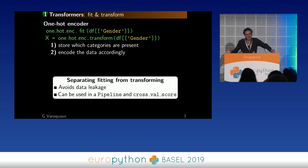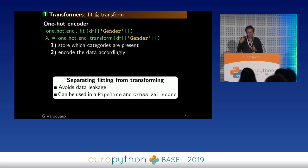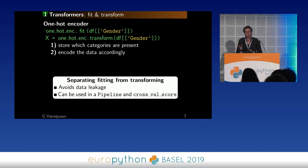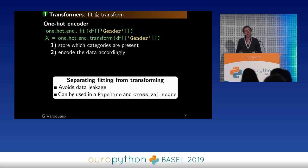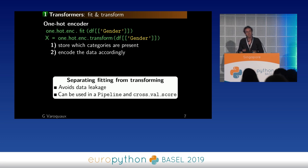In scikit-learn we like to work with things we call transformers. Looking at the one-hot encoder, we can split the fitting and the transforming: during fitting we're storing which categories are present in the data, and during transforming we encode accordingly. This separation between fit and transform is important because it avoids data leakage between train and test sets when evaluating the pipeline, and we can store the fitted transformer and apply it to new data at predict time for production. It can also be used with tools like pipeline or cross_val_score.